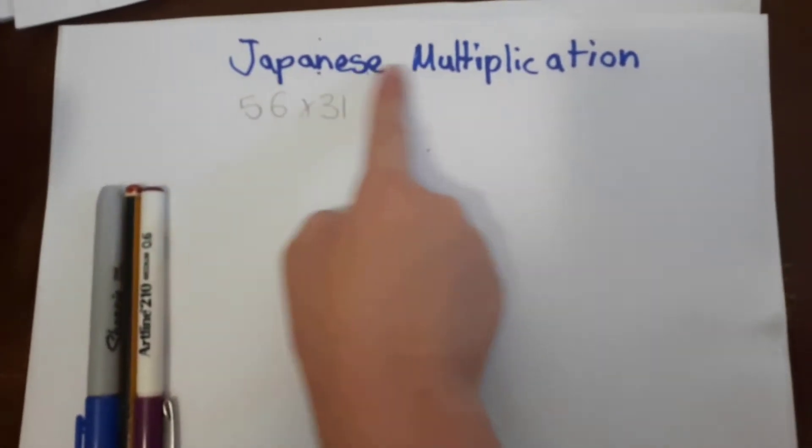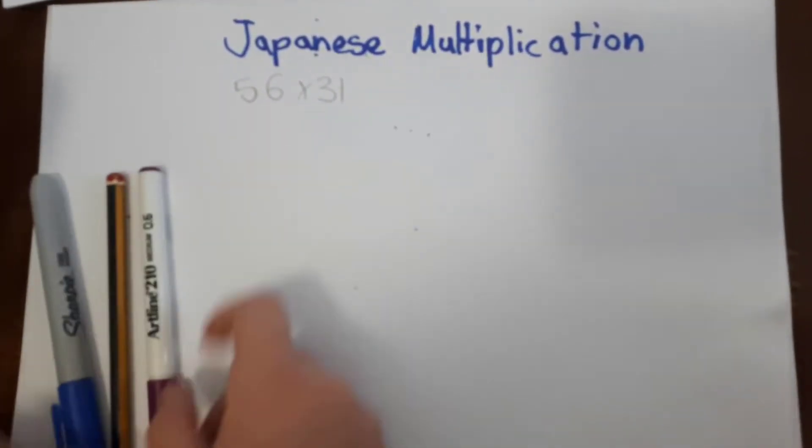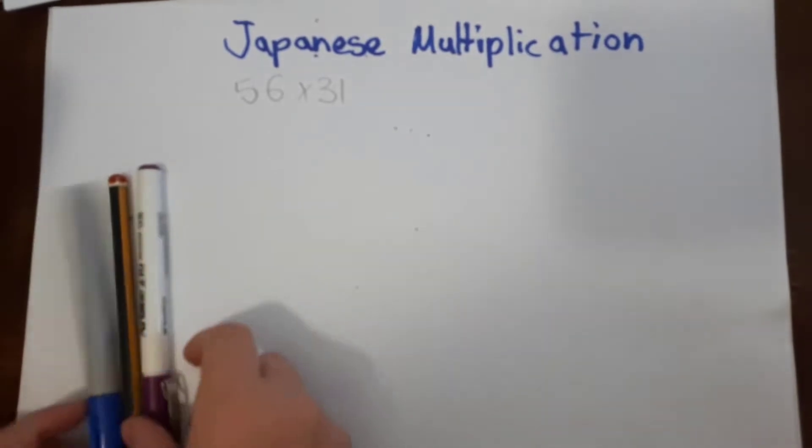So today I'll be teaching you about Japanese multiplication. So our sum is 56 times 31.